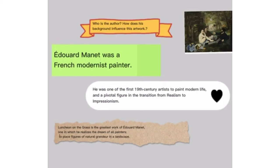Who is the author, and how does his background influence this artwork? Edouard Manet was a French modernist painter. He was one of the first 19th-century artists to paint modern life and a pivotal figure in the transition from Realism to Impressionism. Luncheon on the Grass is considered the greatest work of Edouard Manet — one in which he realized the dream of all painters to place figures of natural grandeur in a landscape.